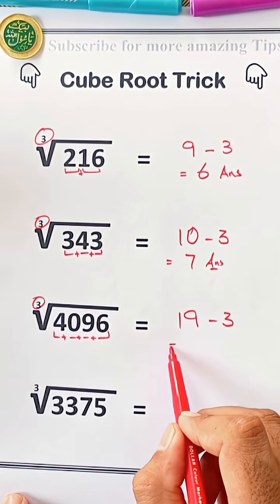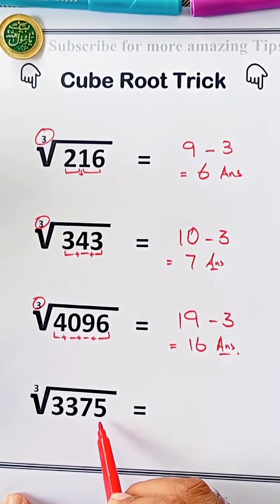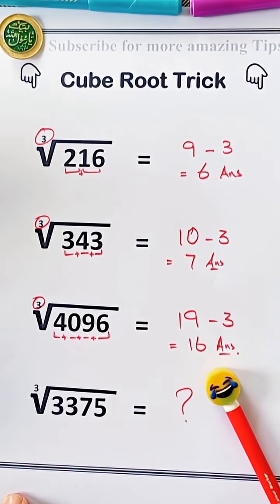Easy, right? This trick works like magic. Try it with 3,375 and you'll be amazed. So, what are you waiting for? Start calculating. Try it with different numbers and drop your answers in the comments.